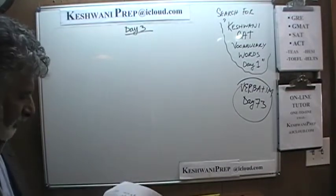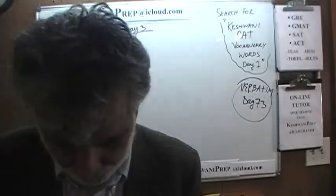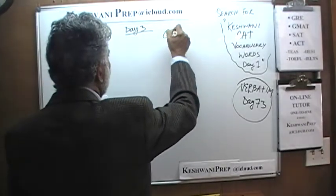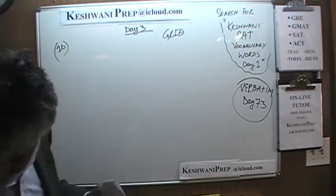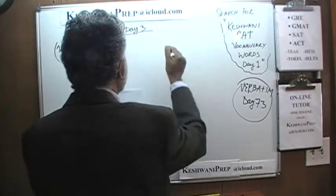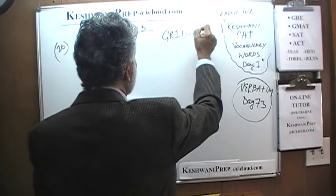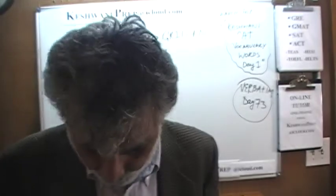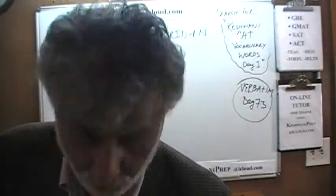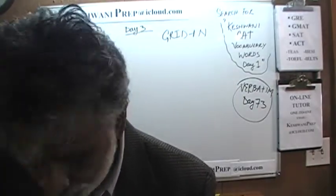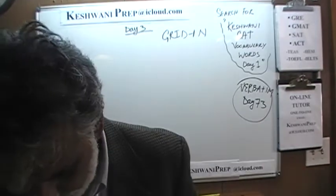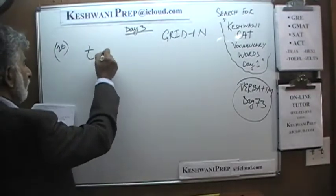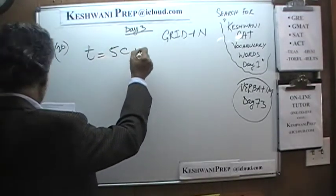Question number 16 — the very first gradient problem. These are known as gradient problems because you have to grid in your own answers. Number 16 says we have a manufacturer who is shipping some items, and the total cost of shipping is 5C plus 12F.